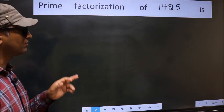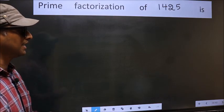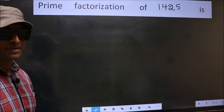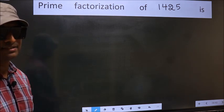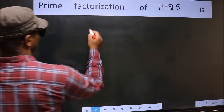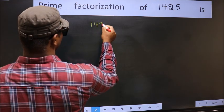Prime factorization of 1425 is. To do the prime factorization, first we should frame it in this way. 1425.